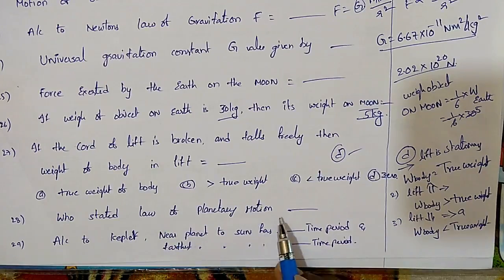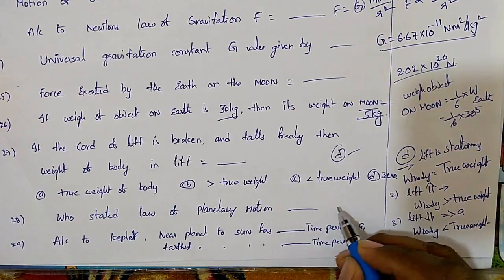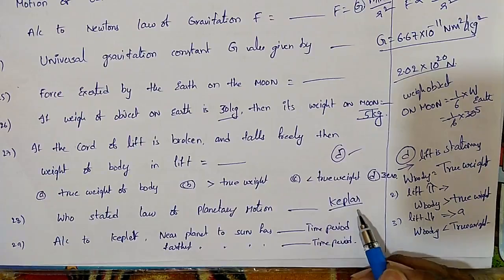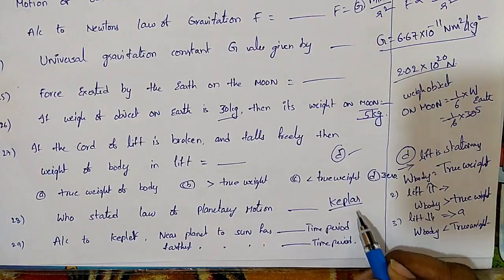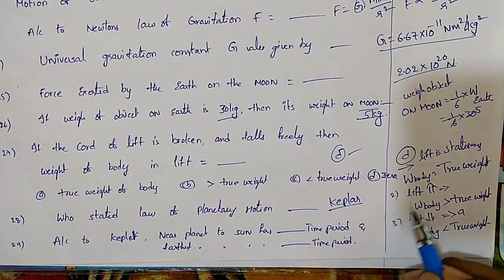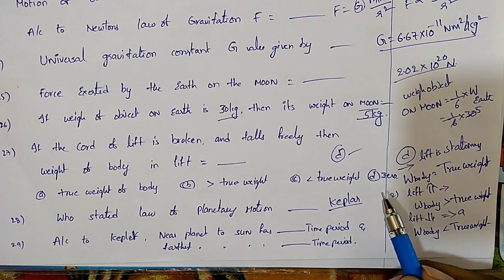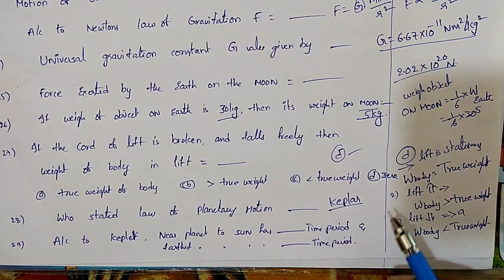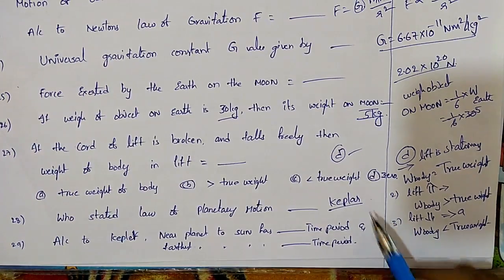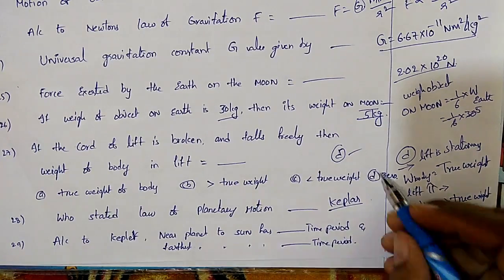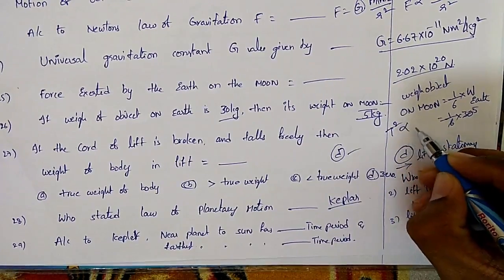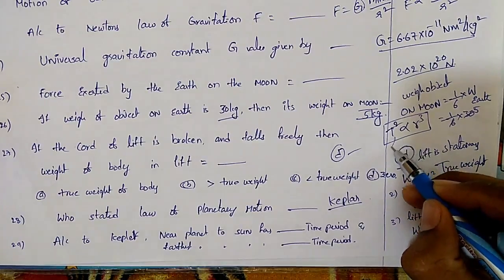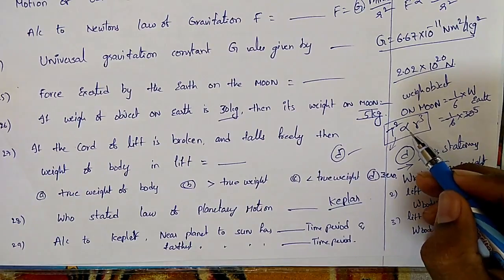The law of planetary motion was stated by Kepler. Kepler's first law: all planets move around the sun in elliptical orbits. Kepler's second law: the line joining the planet and the sun sweeps equal areas in equal intervals of time, meaning the velocity of the planet around the sun is constant. Kepler's third law: the time period squared is proportional to the distance cubed.